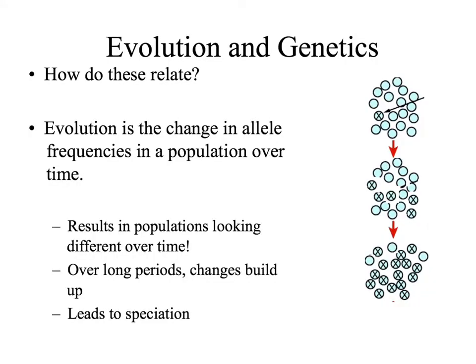We need to see that evolution and genetics go hand in hand. When we talk about evolution, we are talking about changes in allele frequencies. Remember, alleles are the variations of genes. This means that evolution is working on inherited traits — things that we pass on from parent to offspring. The result of evolution is a population changing over time, which can be over very long periods as traits and differences build up, and it can lead to speciation, or the formation of a brand new species.